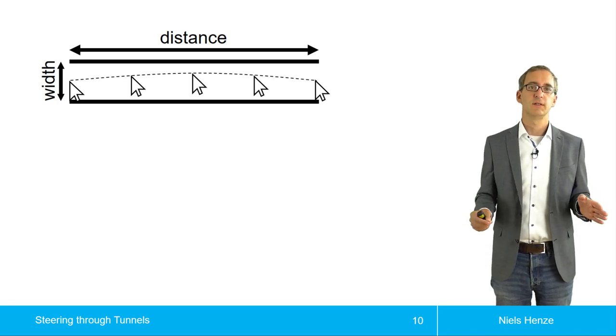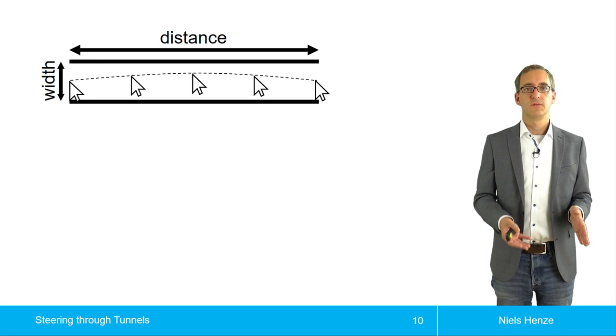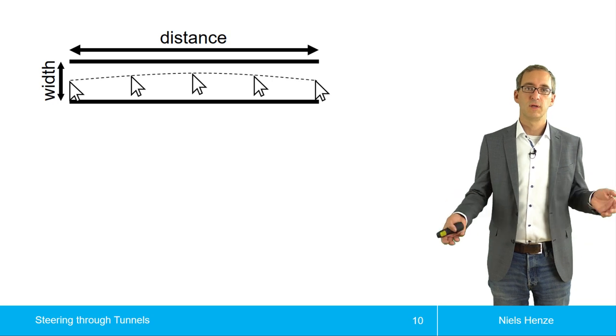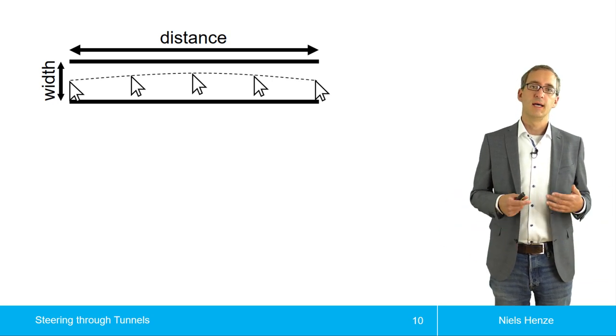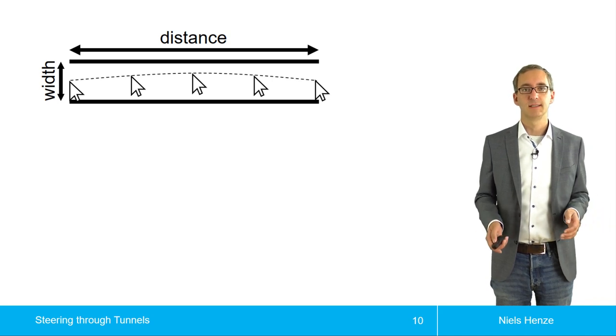And this part doesn't change. So for each point, we have the same problem: don't leave the tunnel. So we have an additional problem if we want to steer through a tunnel compared to Fitts' law, or at least the problem at each point remains as hard as it was in the start.